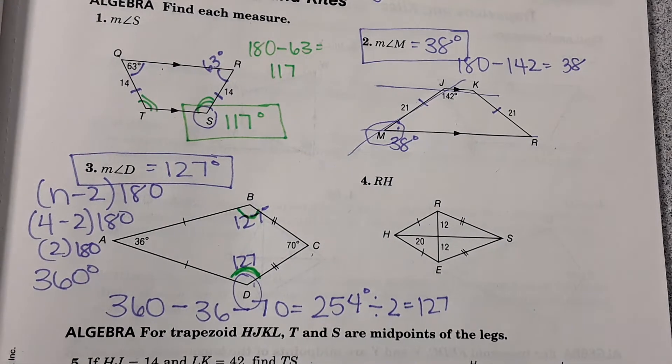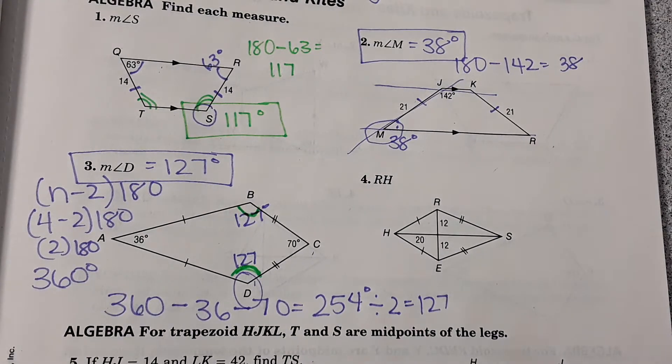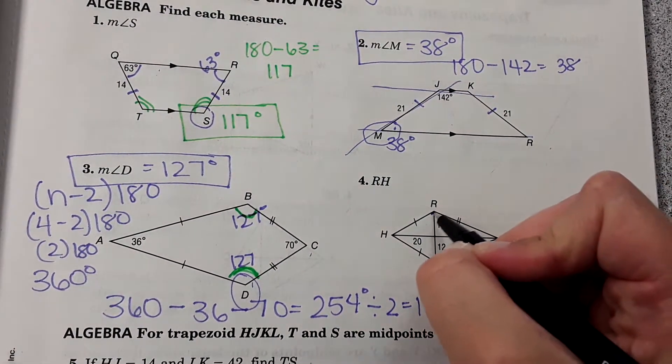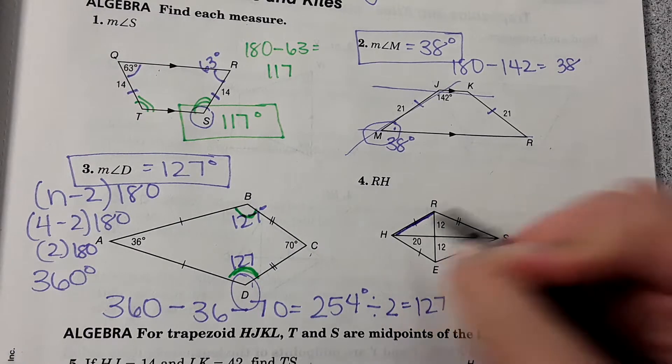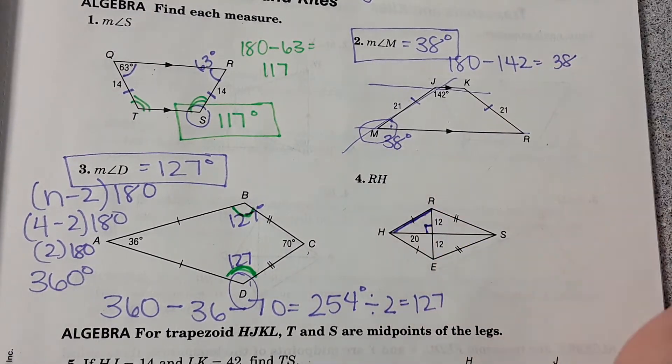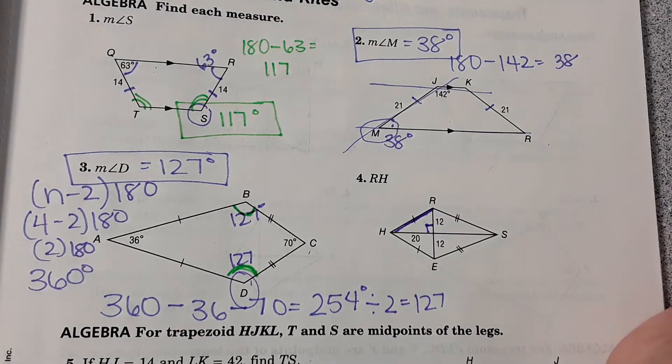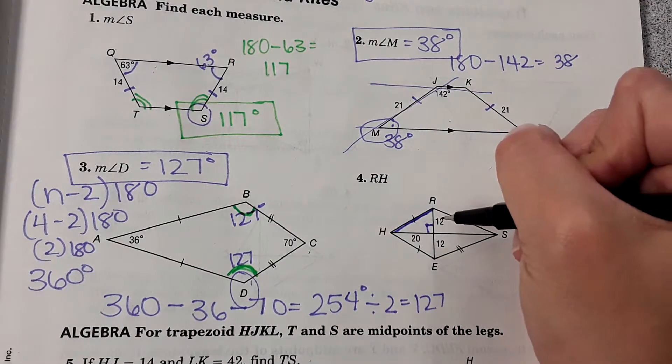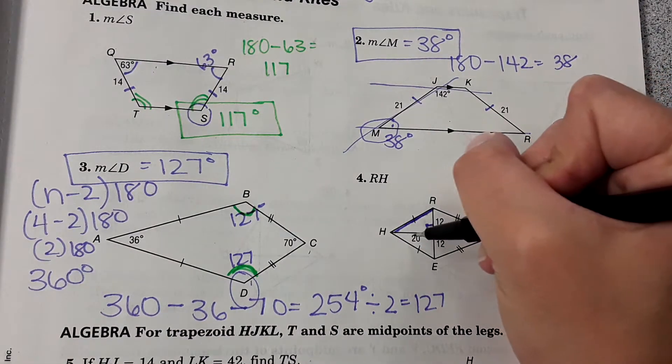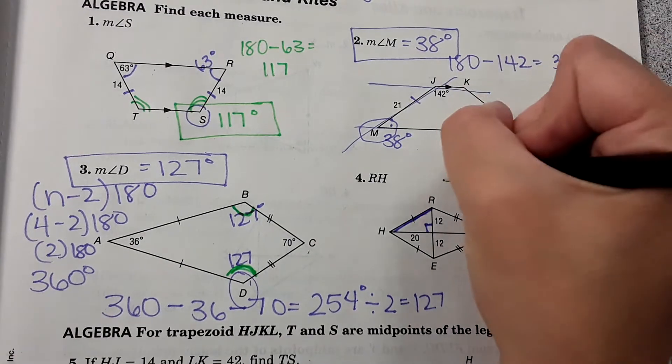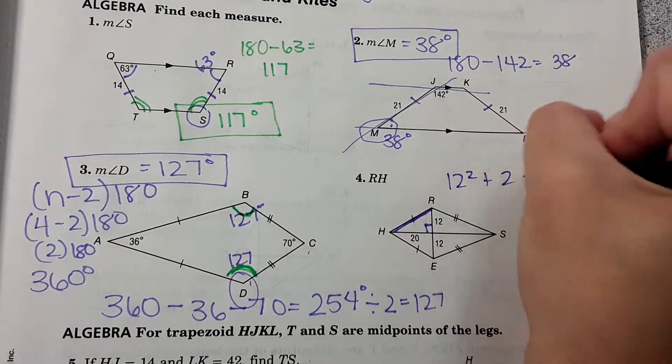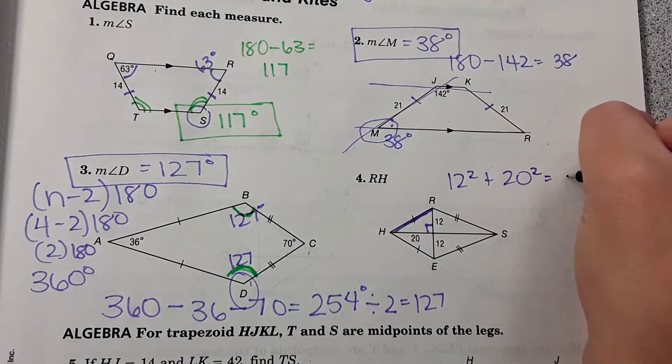Number four. Another kite, this time is asking for the length of RH. Remember with a kite the diagonals are perpendicular to each other. So we're going to use Pythagorean theorem to find RH. So 12 squared plus 20 squared equals C squared.